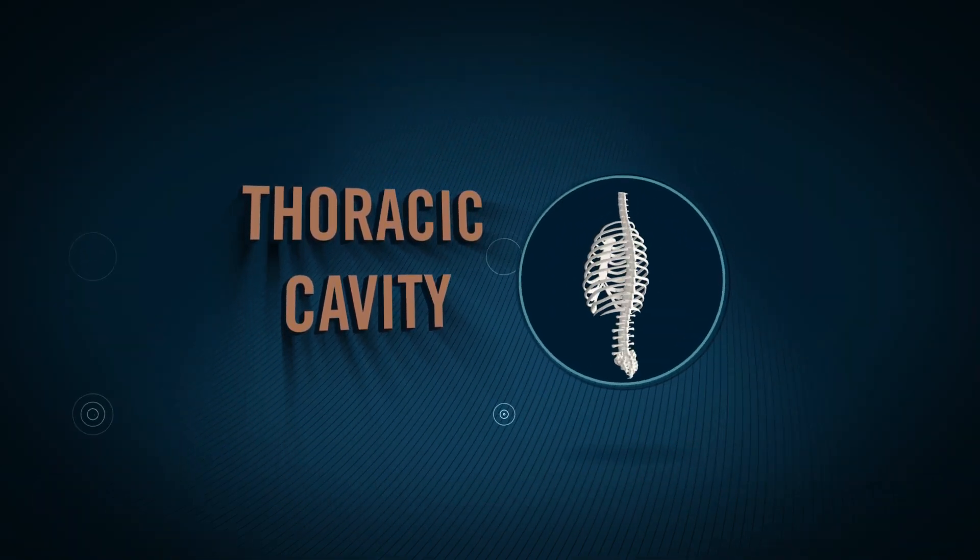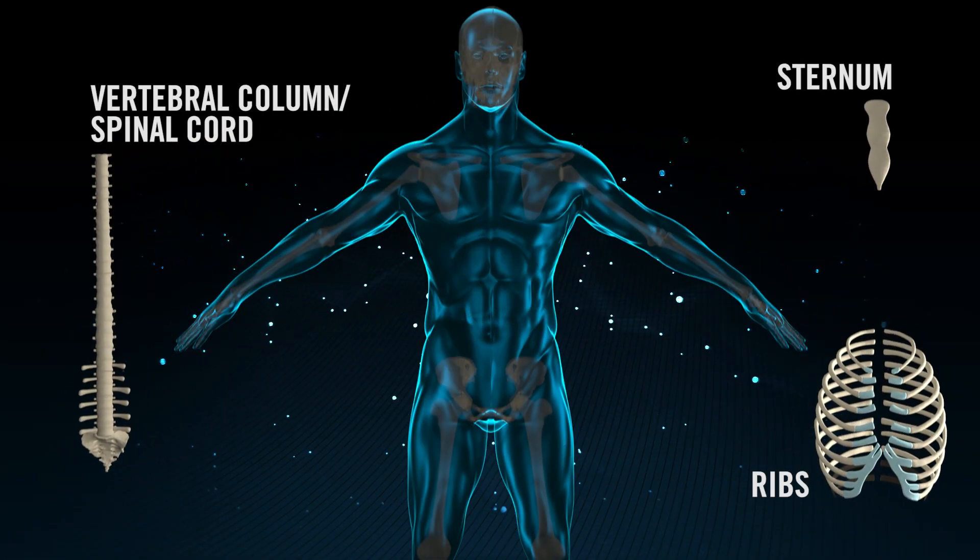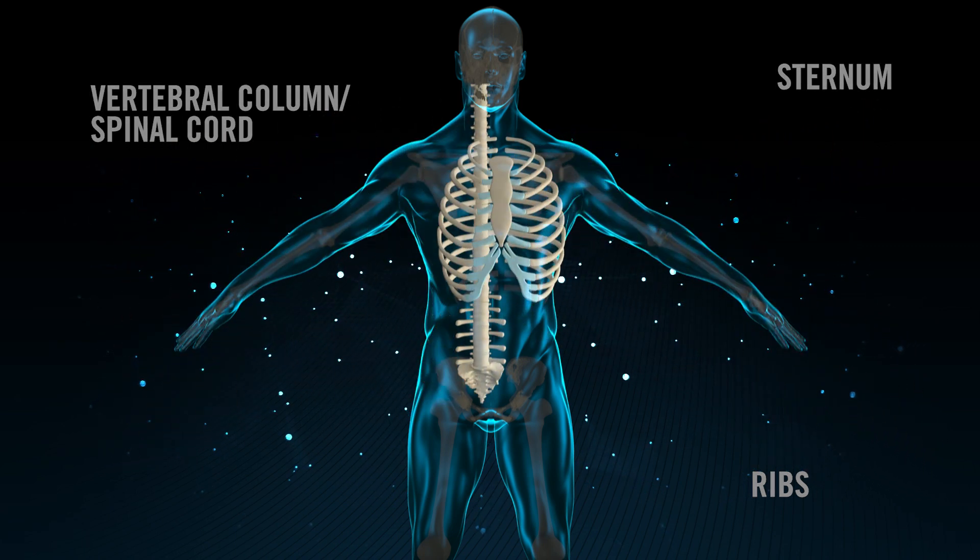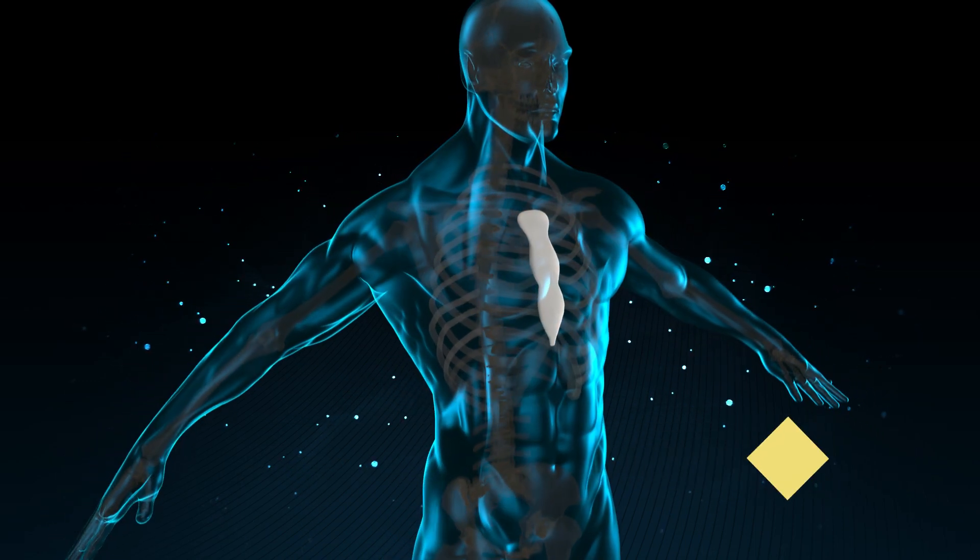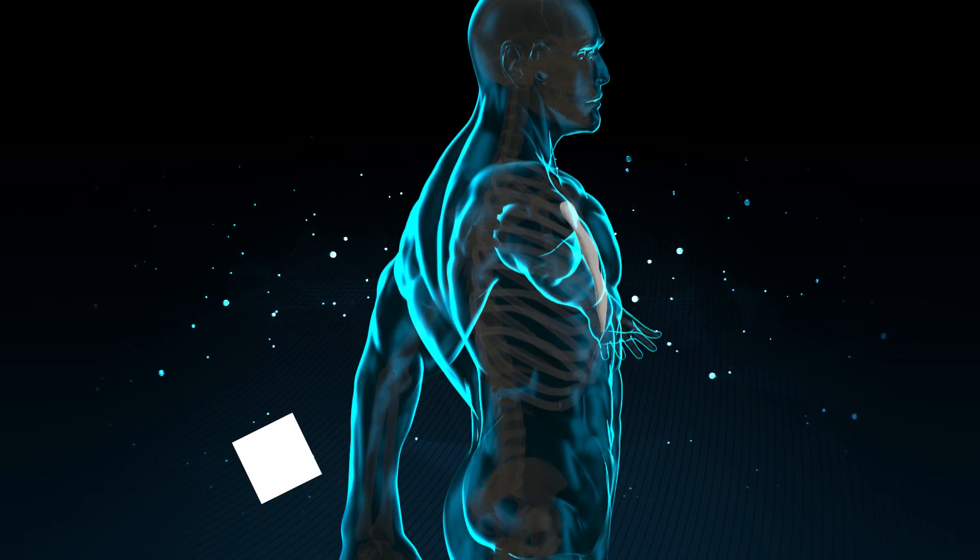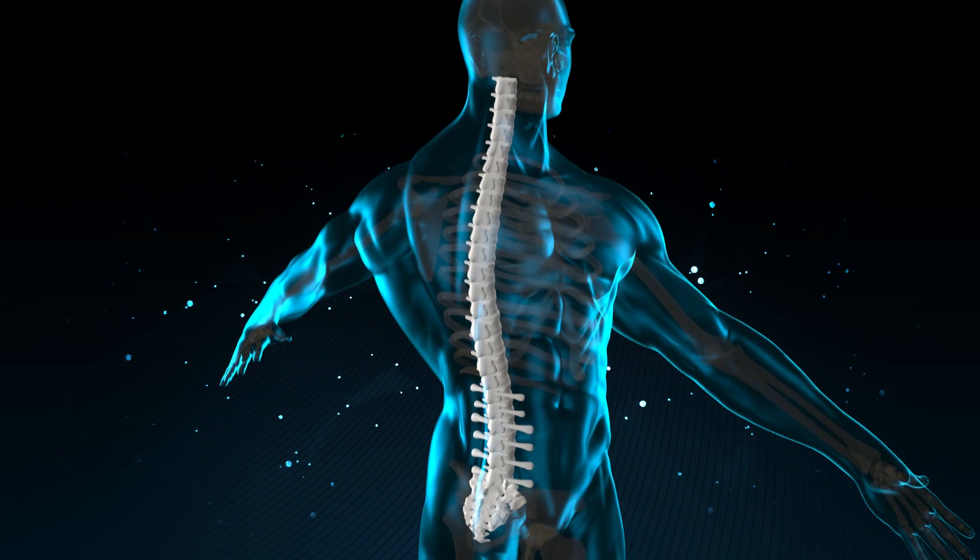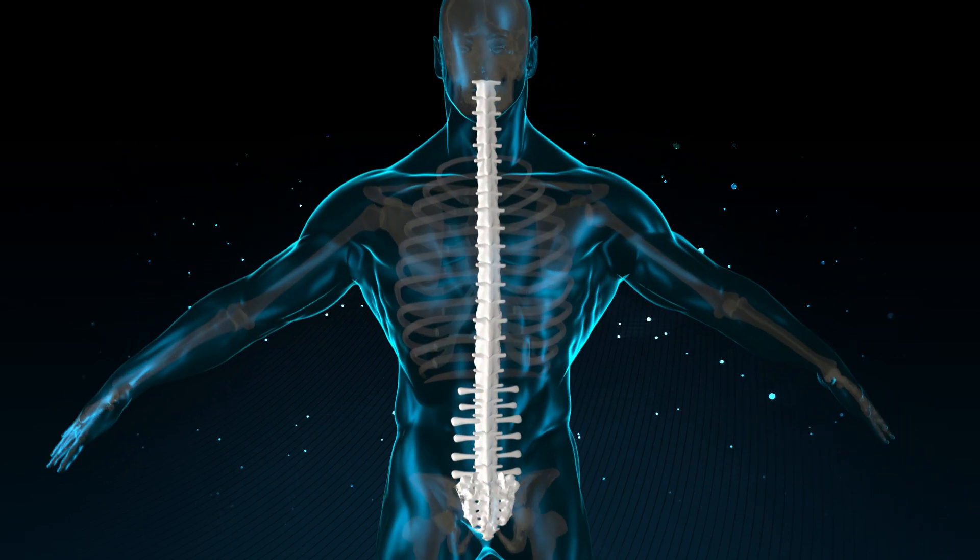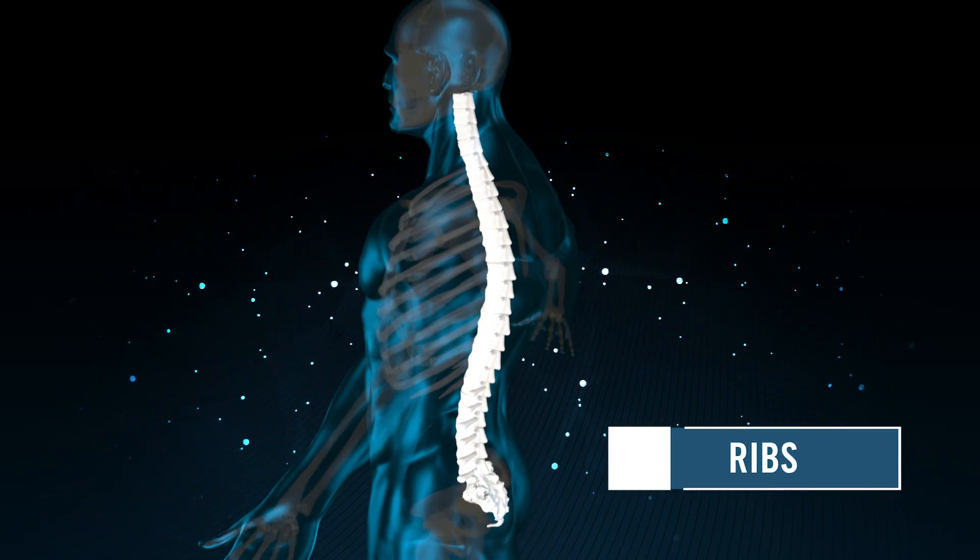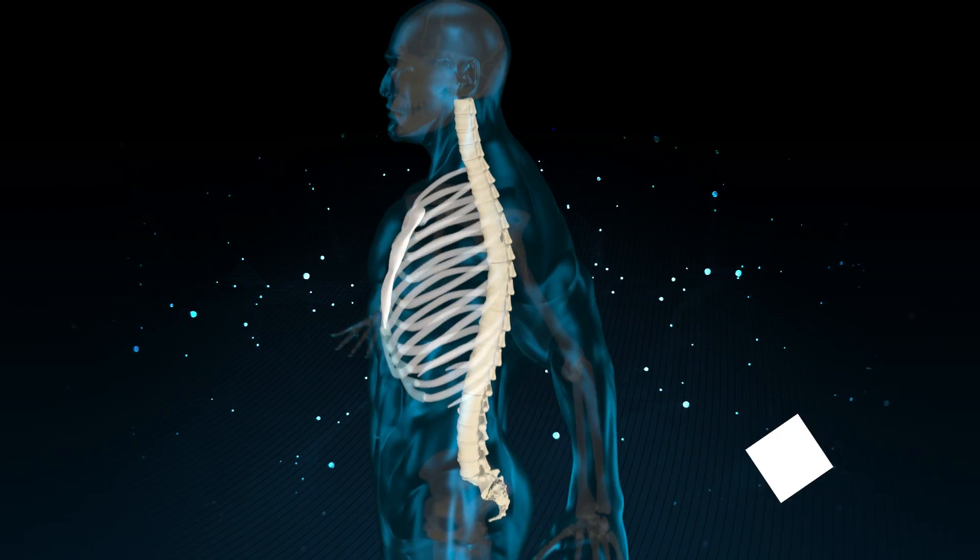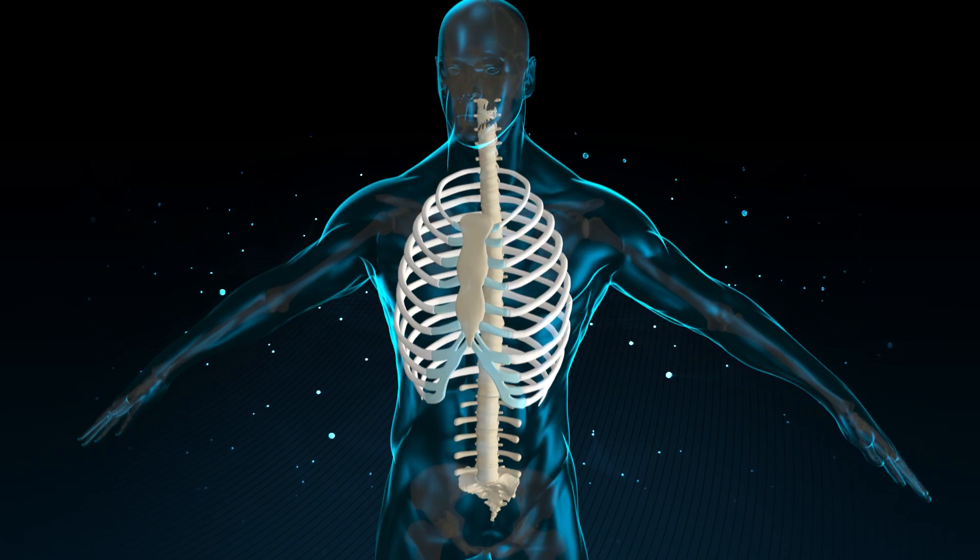Thoracic cavity: The bones of the thoracic cavity are sternum, a single bone present in the front portion of the thoracic cavity; vertebral column or spinal cord, a long vertebral column which is present in the back portion of the thoracic cavity; and ribs. Both sternum and vertebral column are connected on either side with ribs. This is also called the rib cage.